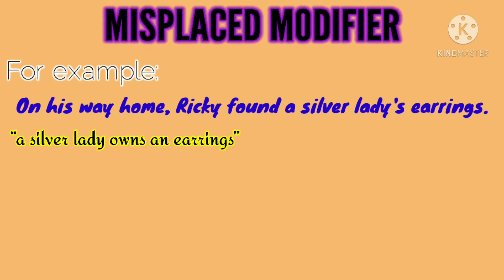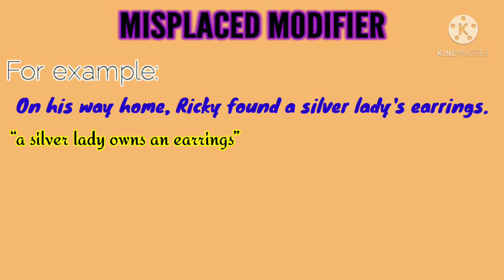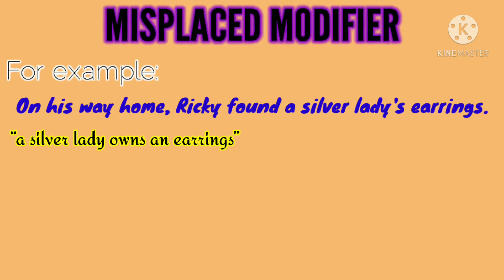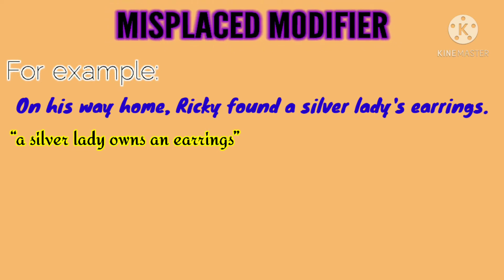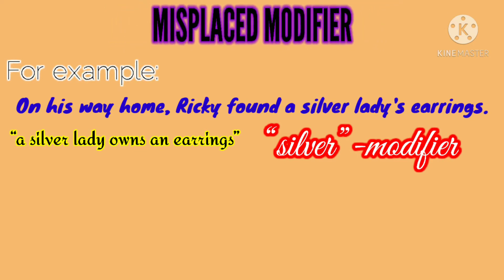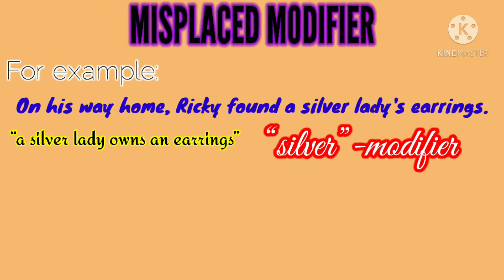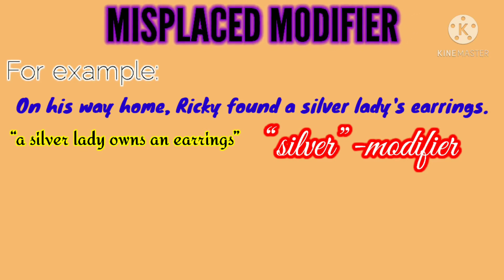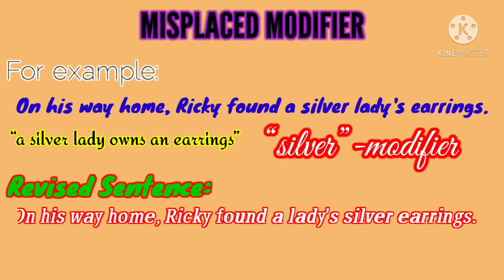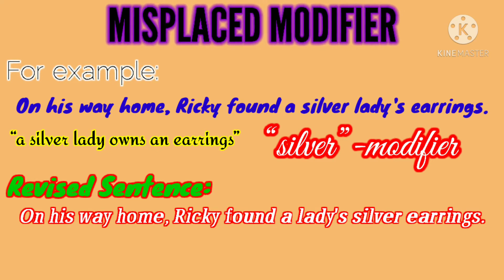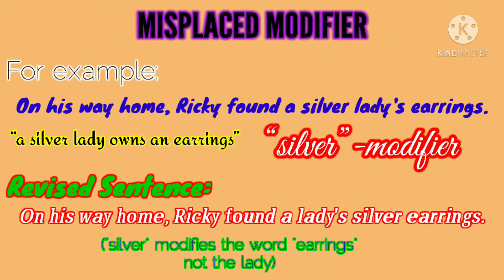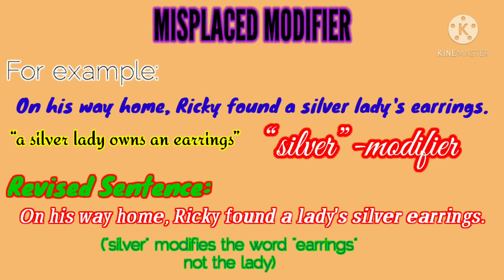There is no such silver lady, so this is what we call a misplaced modifier. To correct the sentence, we need to first determine the modifier — in this case, the word 'silver' — and move it next to the word it modifies. The revised sentence is: 'On his way home, Ricky found a lady's silver earrings.' Here, 'silver' modifies 'earrings,' not 'lady.'